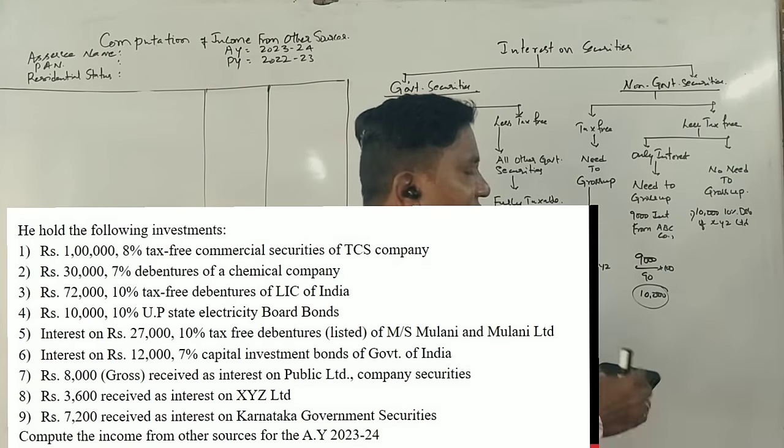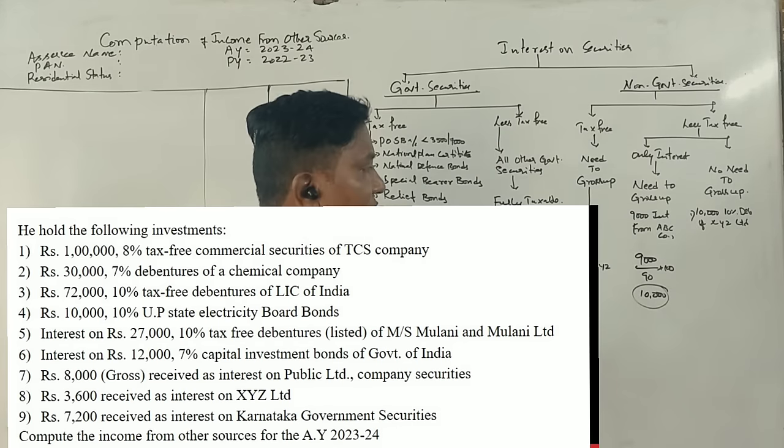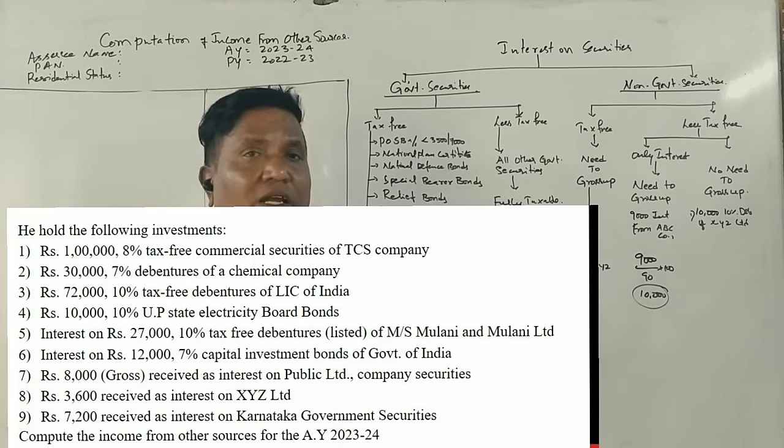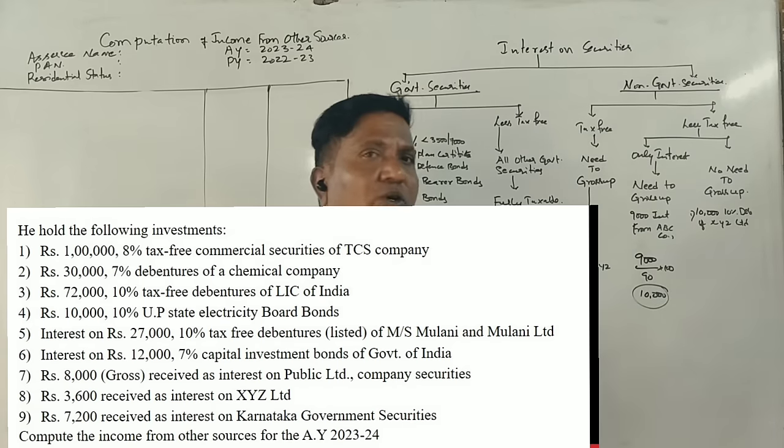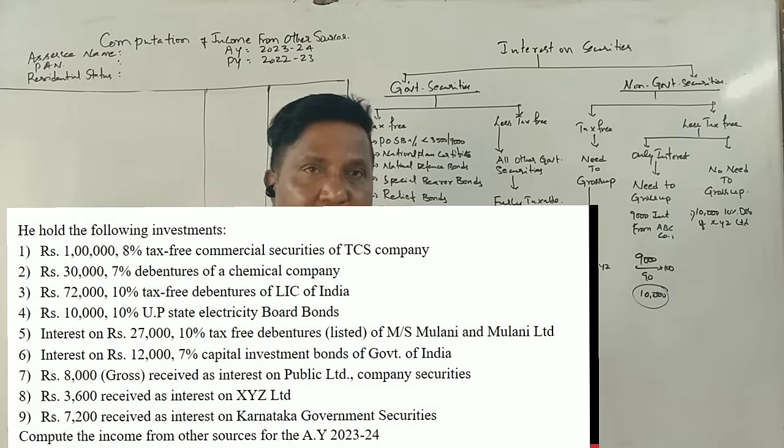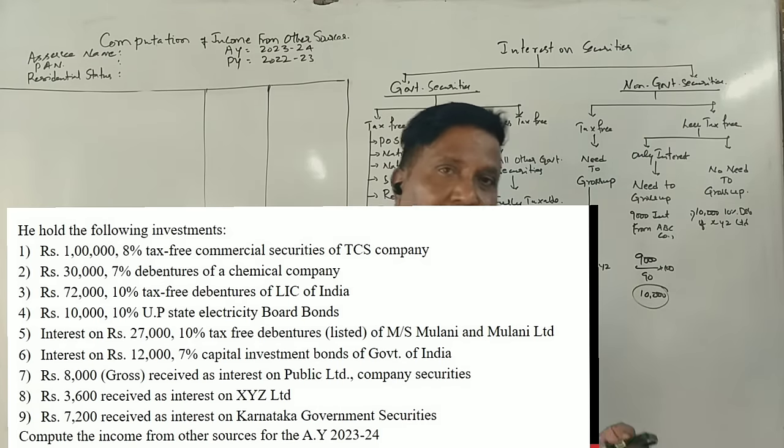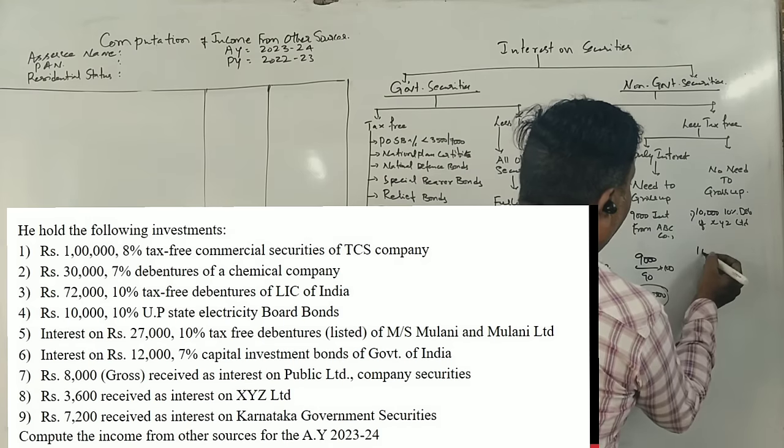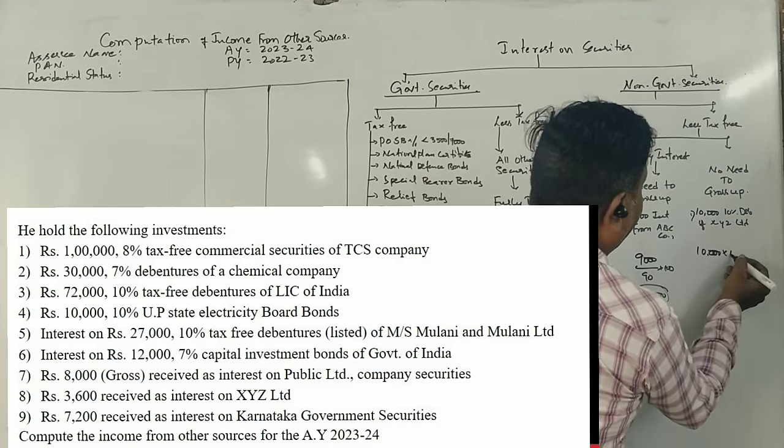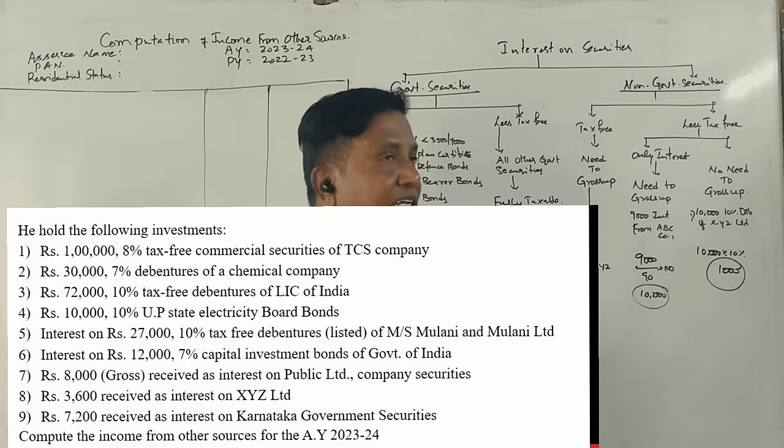Suppose you hold Rs. 10,000, 10% debentures of XYZ company, ABC company, or other company. Now 10,000 direct 10% equals 1,000, fully taxable.